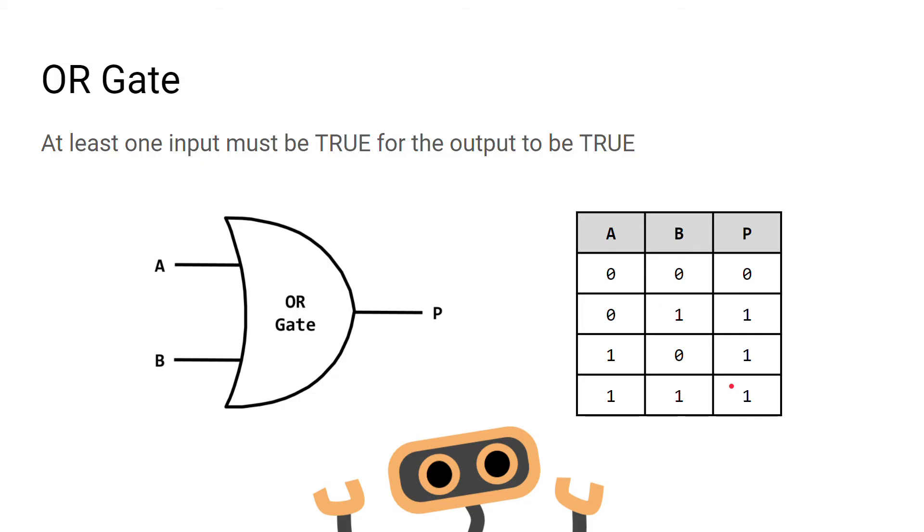Here is a diagram of an OR gate. It has two inputs and one output. For the output to be true or positive, at least one input needs to be true. This is demonstrated on the truth table—as long as one input is turned on, the output will also be on.